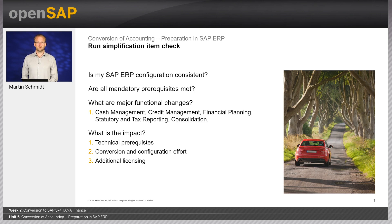Another type of check contained in the simplification item check is the so-called relevance check. It gives you a detailed overview of which simplification items are relevant for you, based on transactions you used, data in your tables, and your configuration. You will get a list of functional and technical changes, and you need to go over this list in detail to determine the impact.